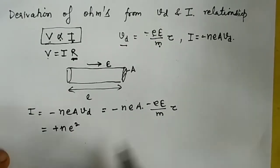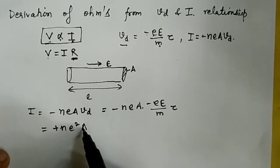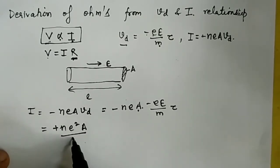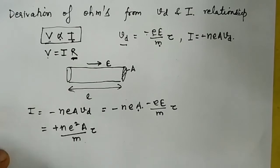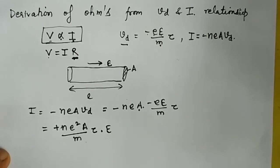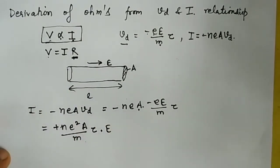I will write E last, so we have A divided by m times tau, and what is left over is E, the electric field. But I want the relationship in terms of electric potential, not electric field.